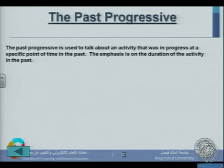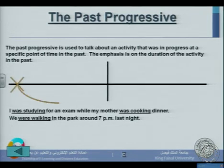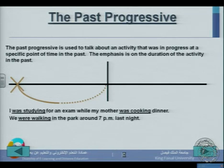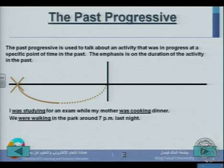The past progressive is used to talk about an activity that was in progress at a specific point of time in the past. The emphasis is on the duration of the activity in the past. For example: 'I was studying for an exam while my mother was cooking dinner' — we have two actions in progress in the past. Another example: 'We were walking in the park around 7 p.m. last night' — this describes a specific point of time in the past.